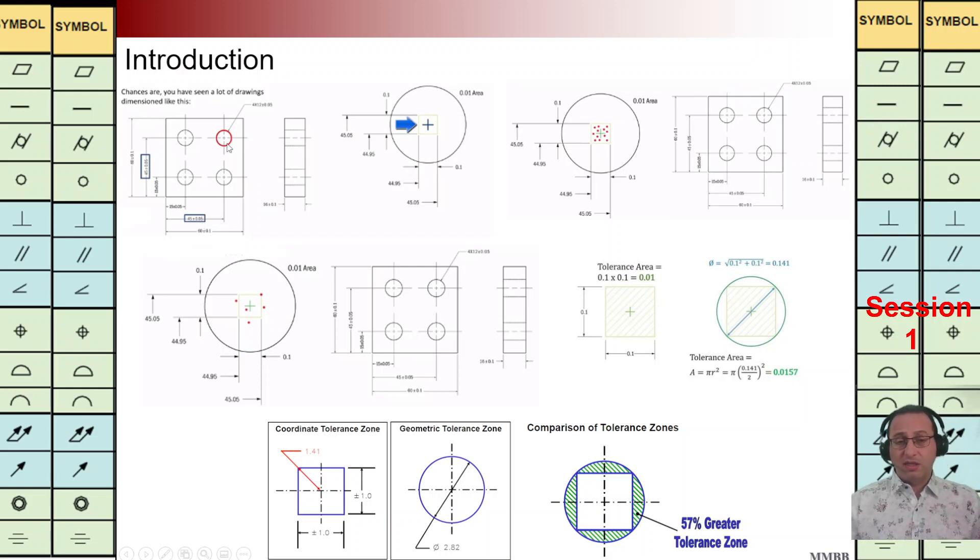It means based on coordinate tolerance zone we need to define this box around the center of this hole with this dimension 0.1 by 0.1, and all points as are shown here in the red color. There are acceptable points.